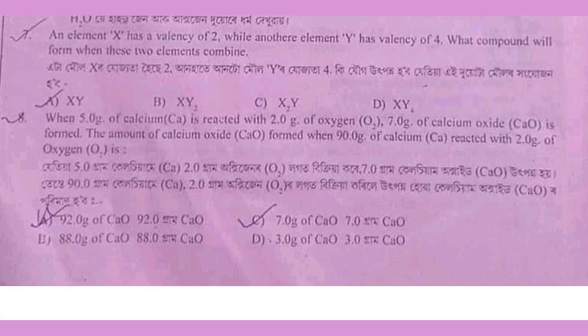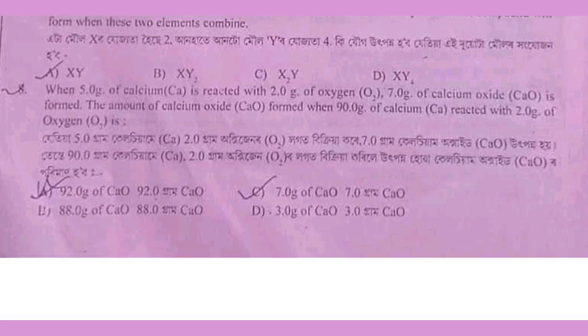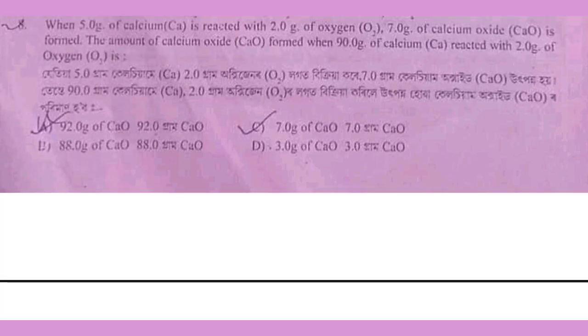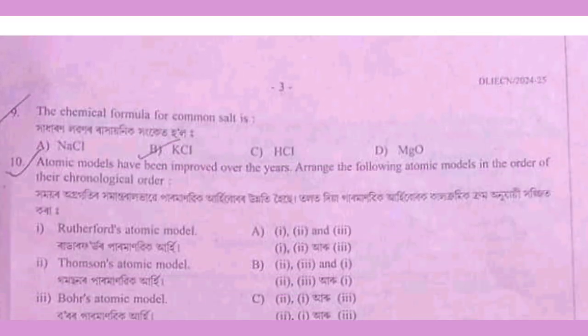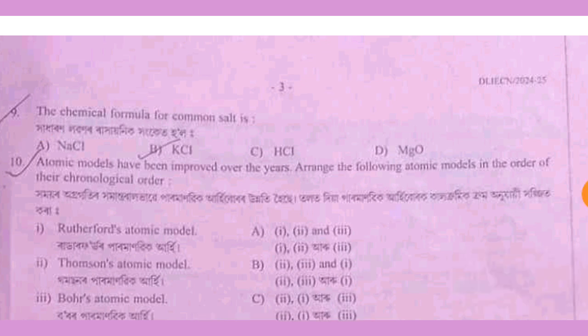Next question: if you have 5g calcium and 2g oxygen, that gives 5g oxide. And 9g calcium with 2g oxide gives 9g calcium oxide.